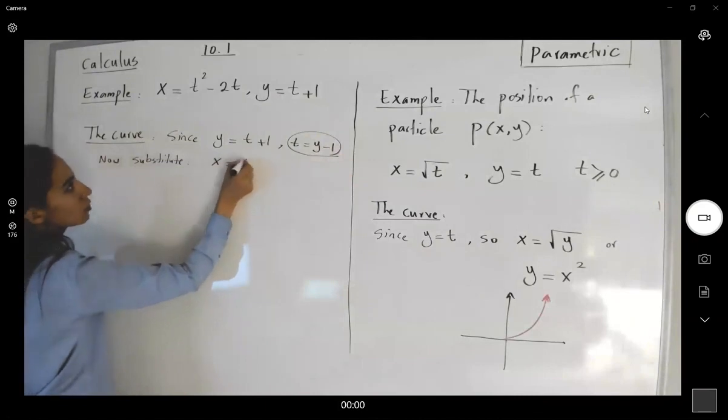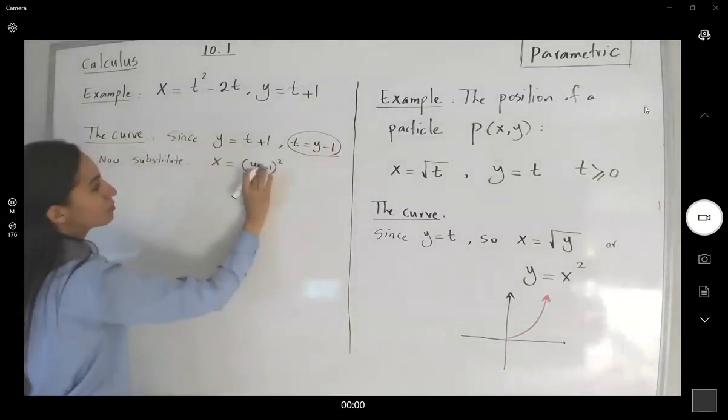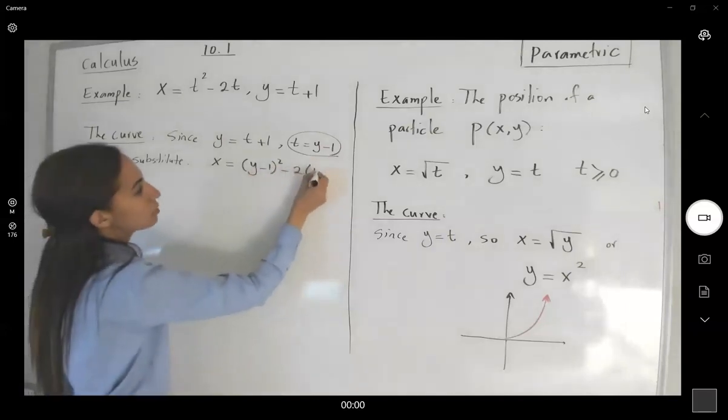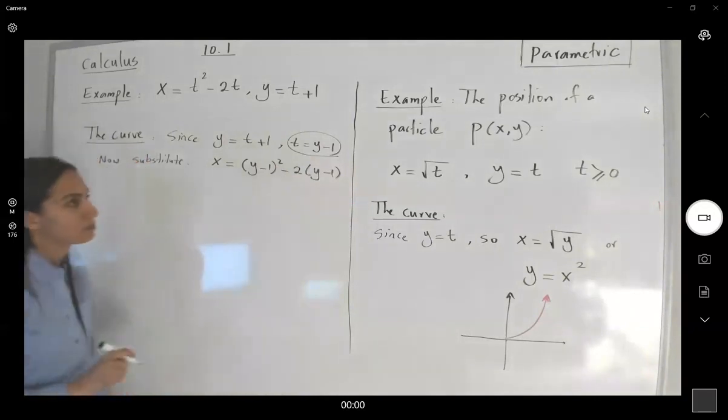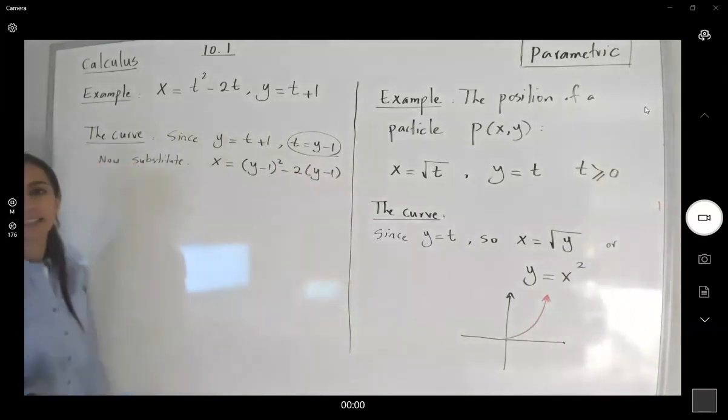x is equal to t squared, so (y minus 1) squared minus two times (y minus 1). Okay, well I don't have any t anymore. I only have x and y, something that I can graph easily using Desmos.